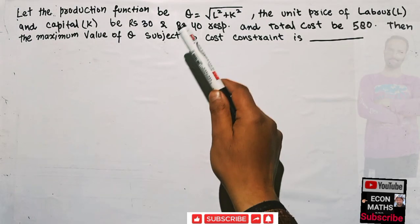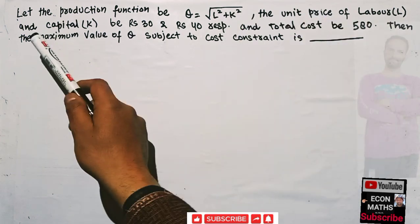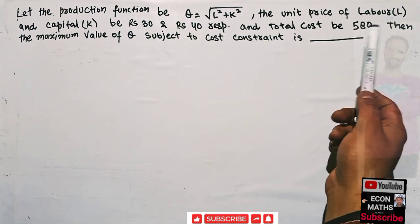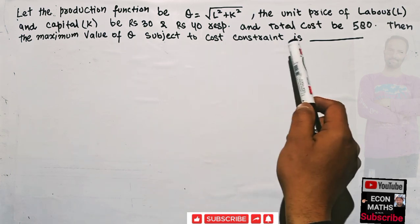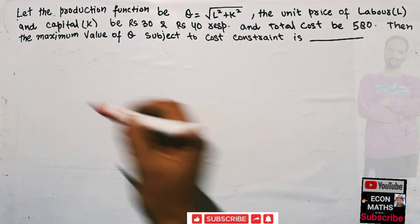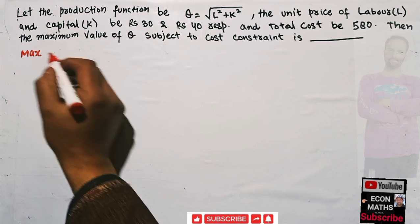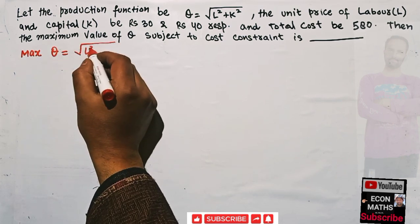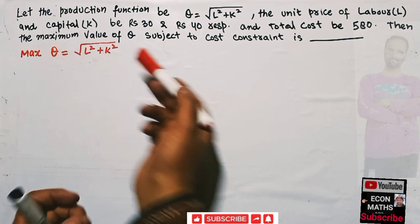The next question: let the production function be q = √(l² + k²). The unit price of labor and capital is 30 rupees and 40 rupees respectively, and total cost is 580 rupees. We have to find the maximum value of q subject to the cost constraint. Our objective function to maximize is q = √(l² + k²).